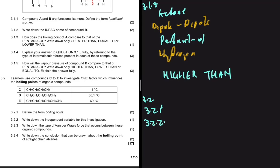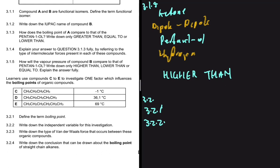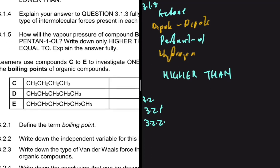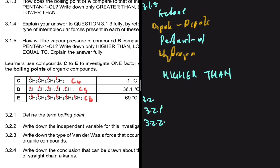For 3.2.2, write down the independent variable for this investigation. We use compounds C to E to investigate one factor which influences the boiling points of organic compounds. Compound C has four carbons, compound D has five carbons, and compound E has six carbons. So what we are changing is the chain length. The answer to 3.2.2 would be chain length, or molecular mass, since as chain length increases, molecular mass also increases.